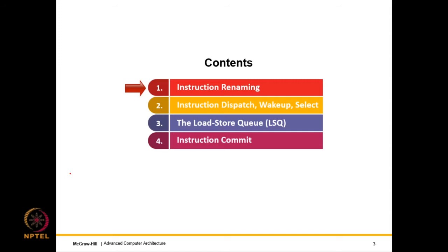In this lecture set we will proceed as follows. We start with instruction renaming — a method to eliminate WAR and WAW hazards. Read-after-write hazards remain and will be addressed in a later chapter. Then we discuss key features of an out-of-order pipeline: instruction dispatch, wake up, and select. The third topic covers loads and stores, discussing memory dependencies, since so far we have only discussed register dependencies.